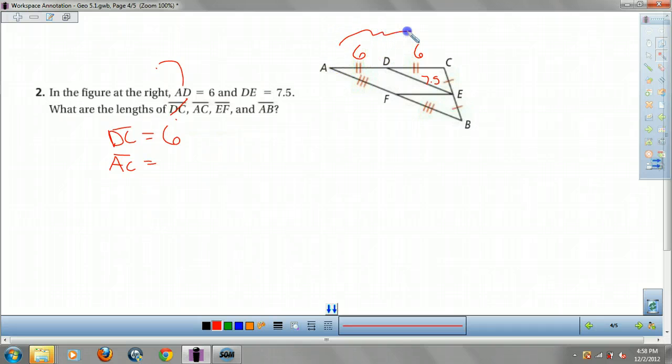What about AC? Oh, what's 6 plus 6, guys? Remember your segment addition postulate? Sum of its pieces. So 6 plus 6 equals the whole thing. Well, 6 plus 6 is still 12 last time I checked. Done.